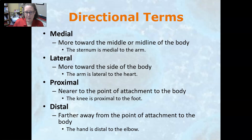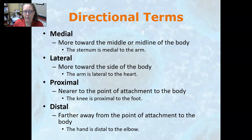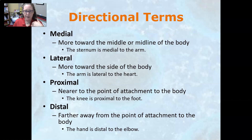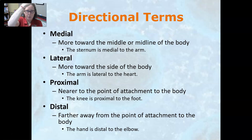Then you have proximal and distal. Proximal means nearer to the point of attachment to the body or nearer to the center. For example, the knee is proximal to the foot because the knee is closer to the center of the body. Distal means further away — just think 'distant' — so the hand is distal to the elbow because the elbow is closer to the body.